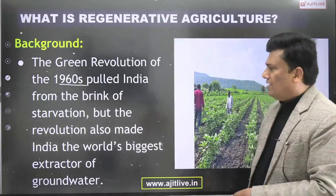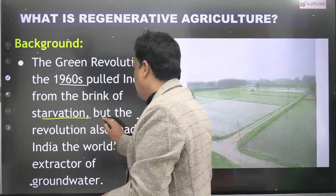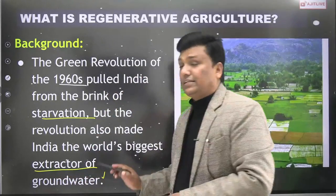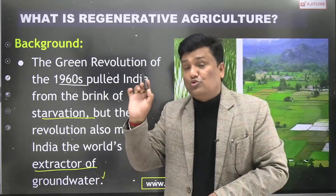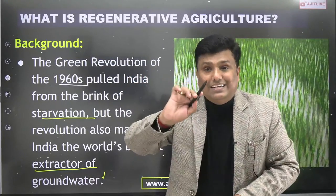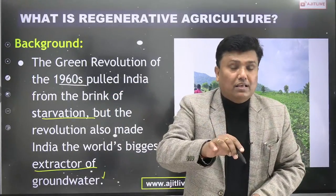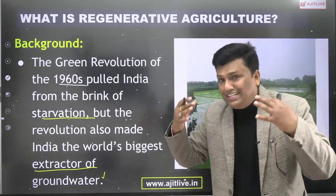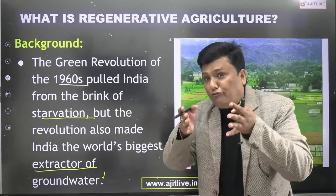From the brink of starvation, the Green Revolution also made India the biggest extractor of groundwater. Because in the Green Revolution, the high yielding variety seeds used have very low tolerance to adverse conditions — drought, insects, pests, pathogens. So they require huge amounts of chemical fertilizers, insecticides, pesticides, and massive water for their growth.